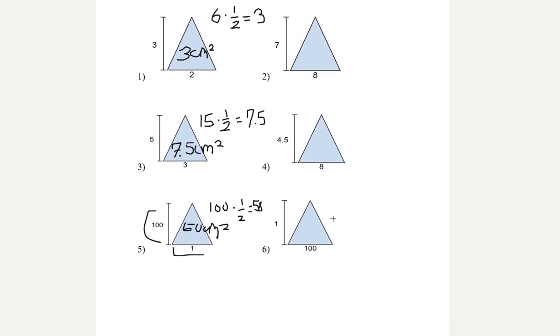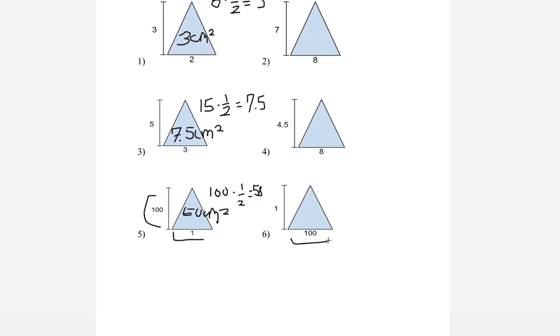Let's try number 6. Base of 100, length of 1. Same thing as the other equation. We get 100. And then our final step is multiplying by 1 half. And then we get 50. And make sure to label 50 centimeters squared.